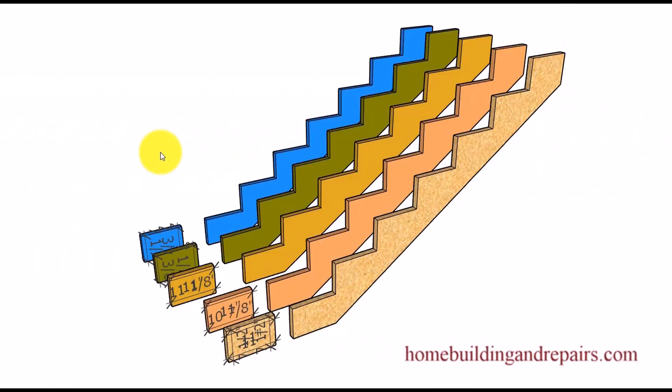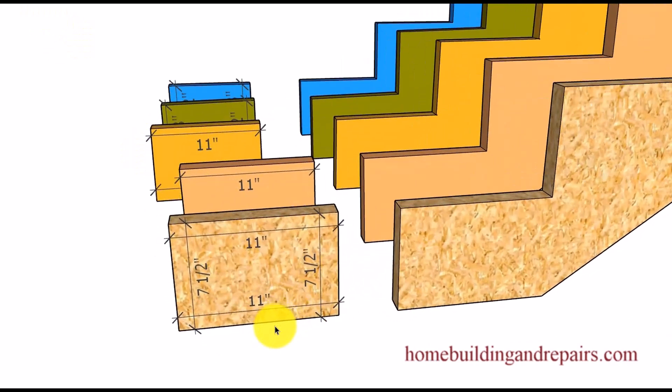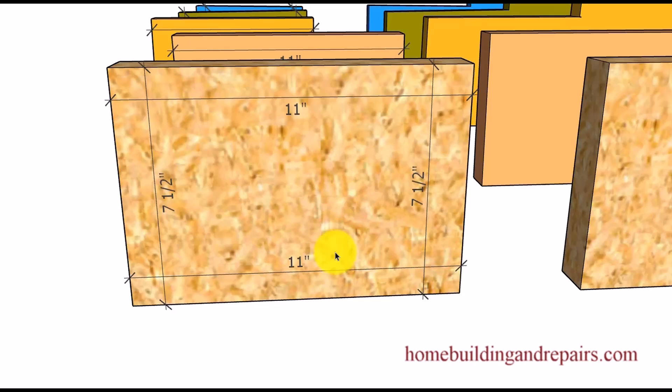In this video I am going to show you what will happen to a stair stringer if you have a framing square that is bent or is not square. I will also be putting a link to a video about how you can check a framing square to see if it is still square or out of square. The stringer layout here will be the result of a framing square that is bent slightly in four different directions.